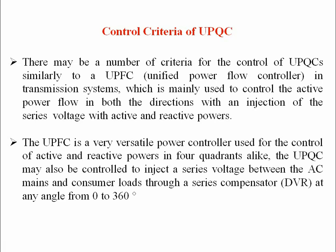UPQC may be controlled to inject a series voltage between the AC mains and consumer loads through a series compensator. The Dynamic Voltage Restorer (DVR) is the series compensator and can operate at any angle from zero to 360 degrees — that's why we call it versatile. It facilitates a wide range of operating angles covering all four quadrants: 0–90, 90–180, 180–270, and 270–360 degrees.